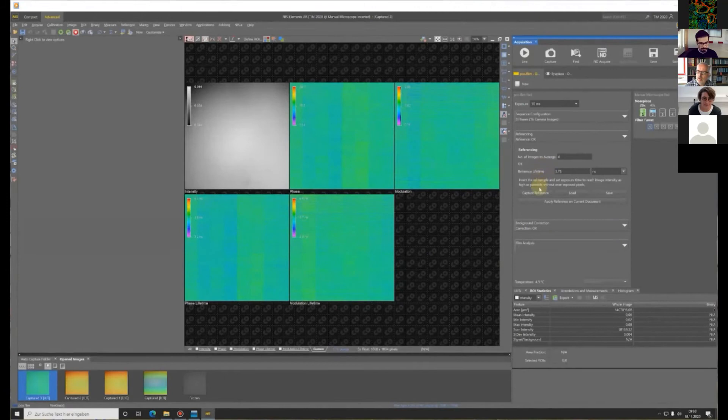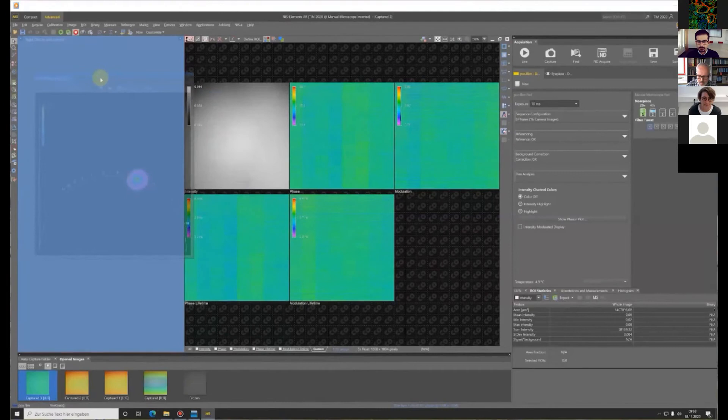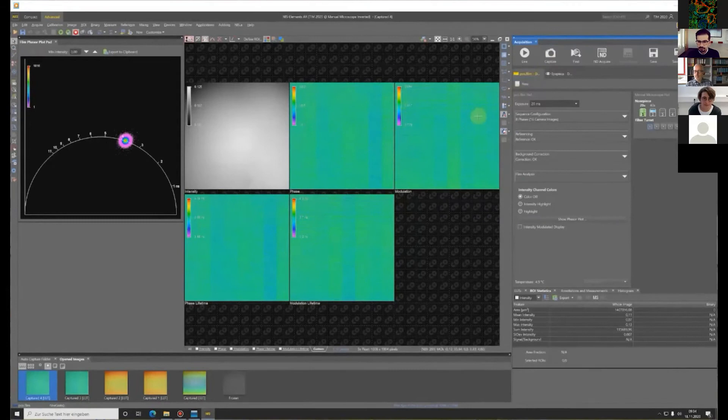You will now see that the number of result images has changed because since the reference was successful, now it is possible to convert the phase angle and the modulation index distributions into phase lifetime distributions and modulation lifetime distributions. To get a better impression if this reference was successful, I'm switching to the FLIM analysis tab and have a look at the phasor plot. Here you see the signal distribution in the phasor plot. It should be centered around 3.7 nanosecond and if the reference was successful, it should have a circular shape because of the signal-to-noise behavior of the results. This looks like a good reference measurement and now with this reference measurement you can take as many real data measurements as you like.